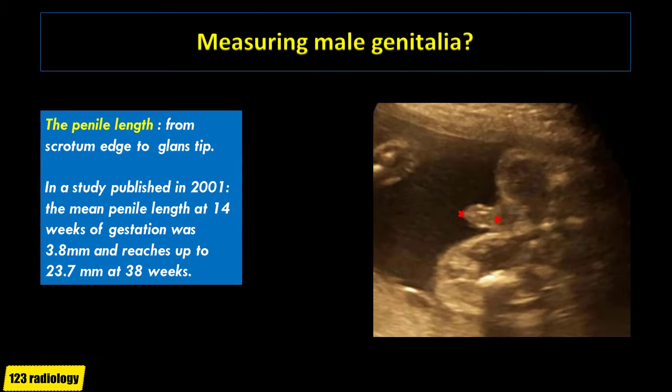The penile length can be measured intrauterine, measured from the scrotal edge to the tip of the glans. In a study published in 2001, the mean penile length at 14 weeks of gestation was about 3.8 mm and reaches up to 23.7 mm at 38 weeks.